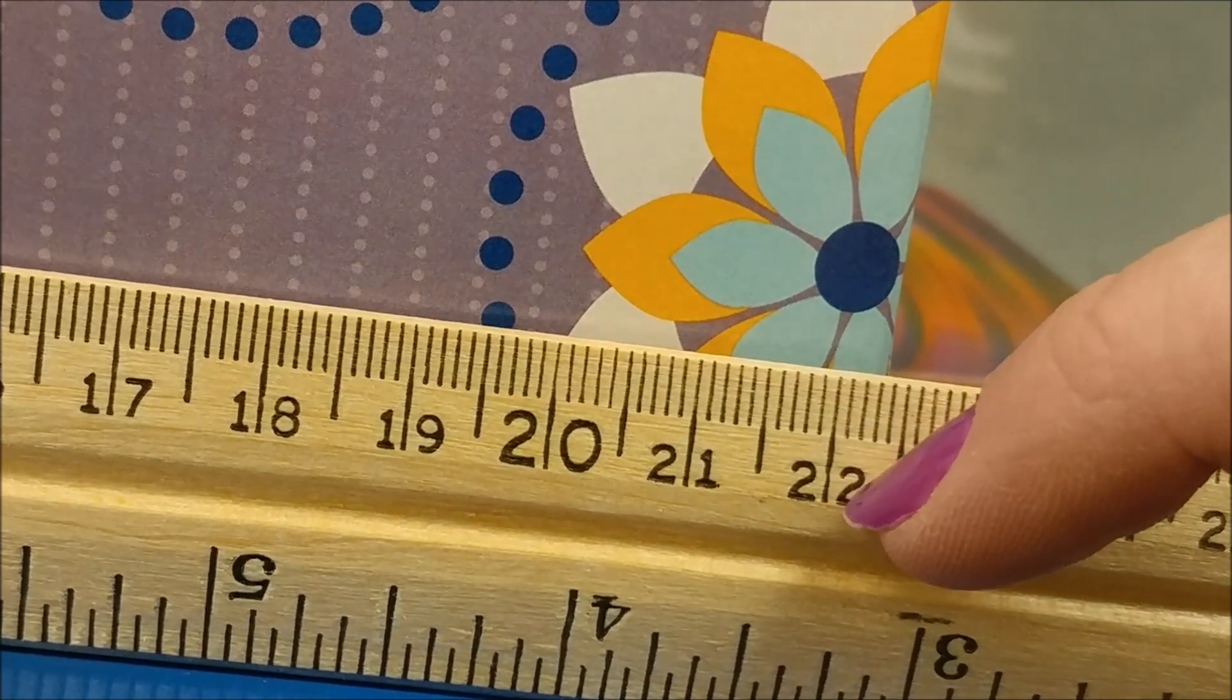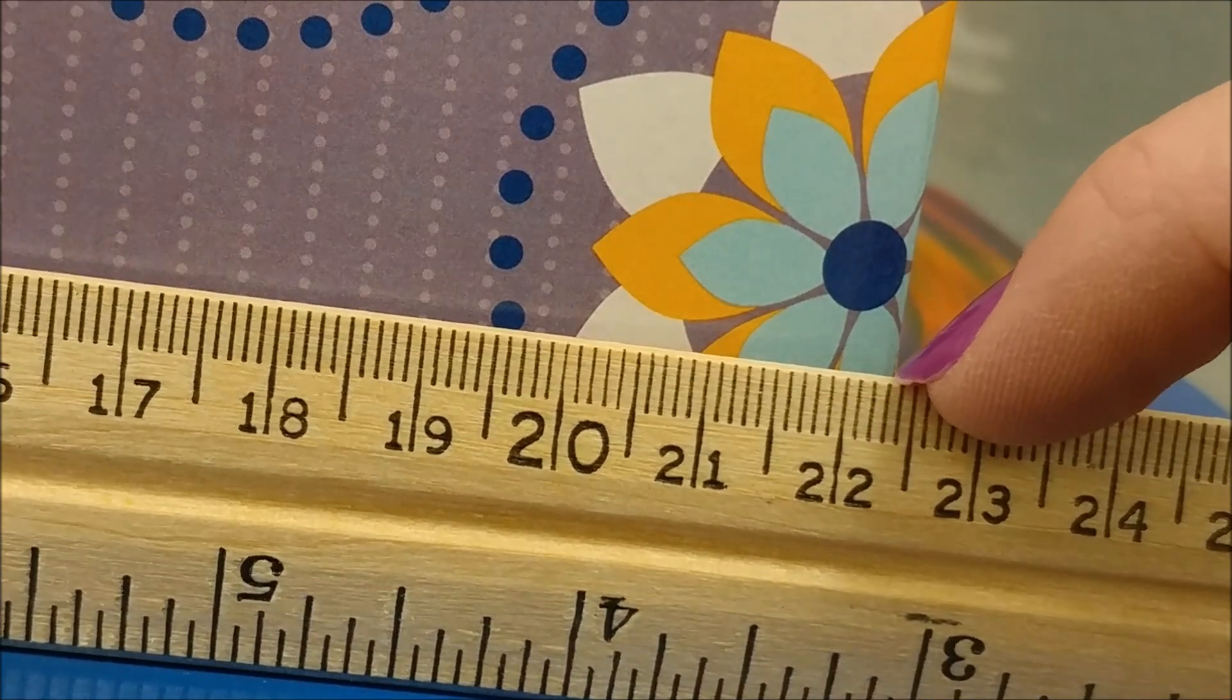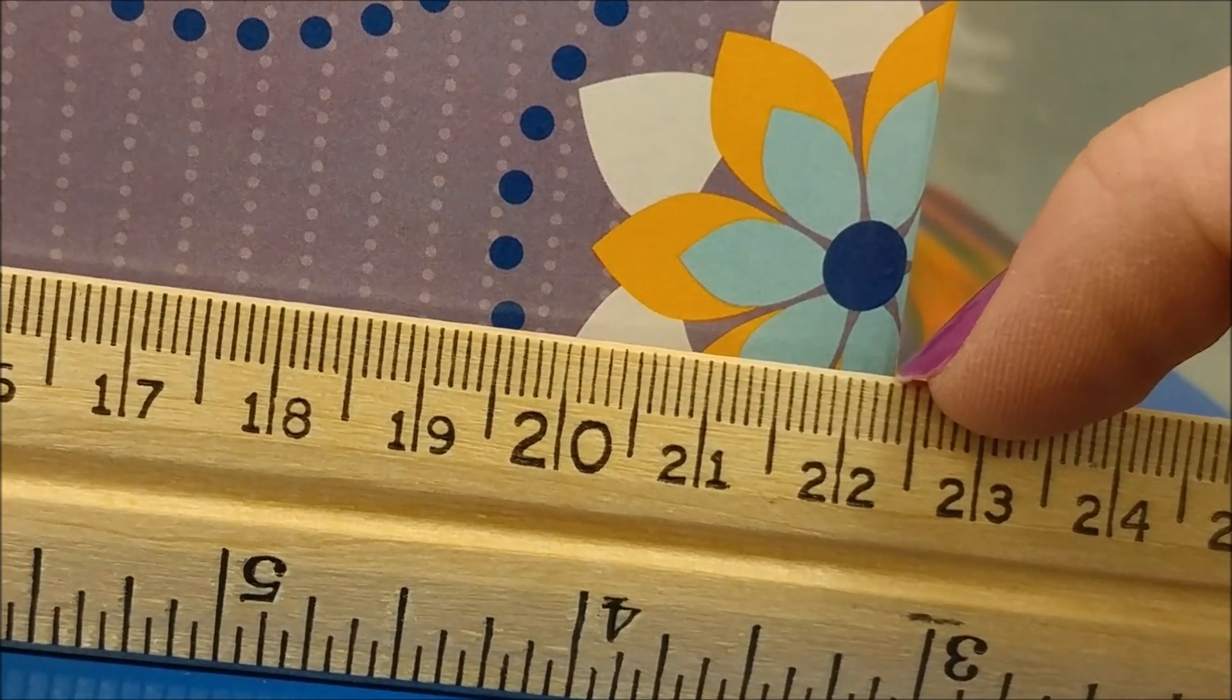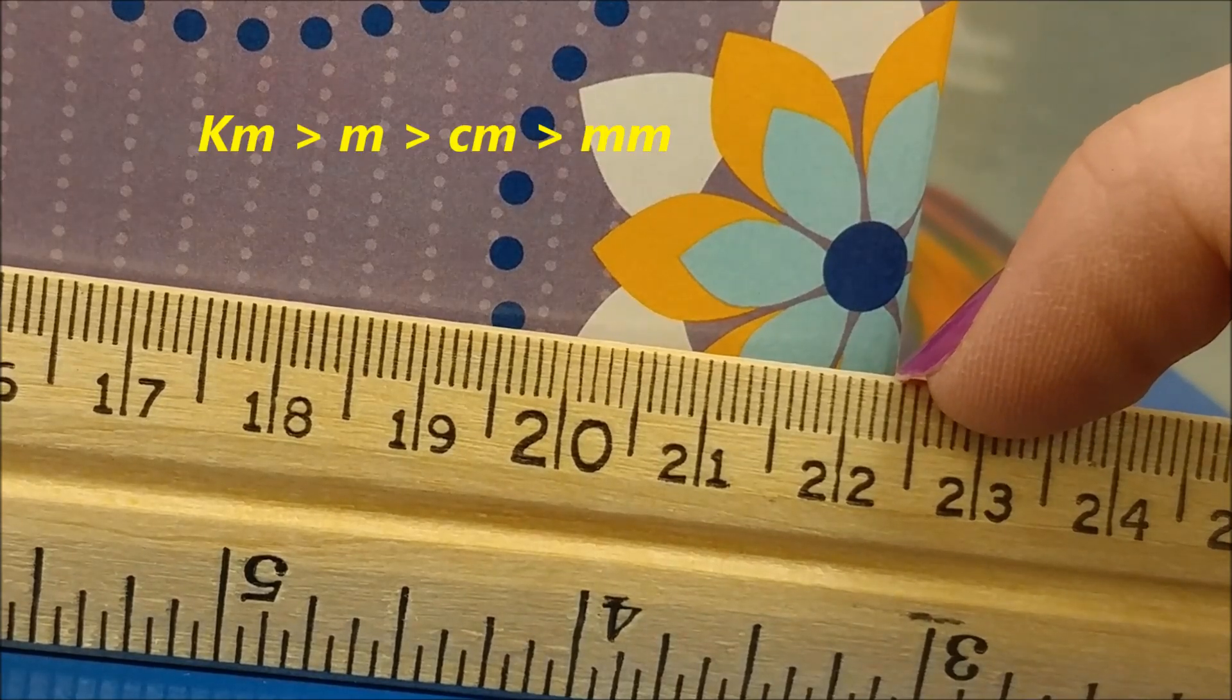The teeny teeny little lines are millimeters because they're smaller. Millie is a smaller unit. So this tissue box is 22.3 centimeters long.